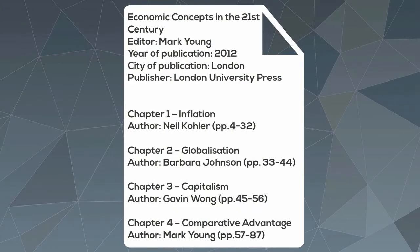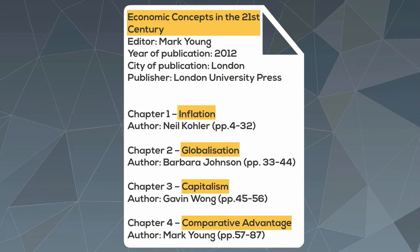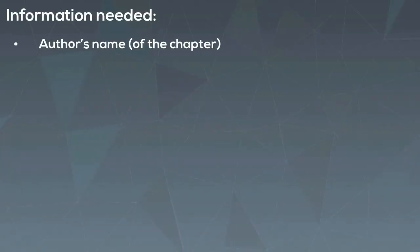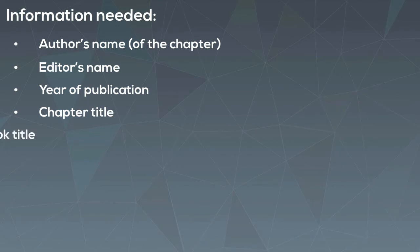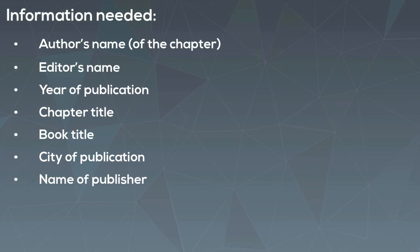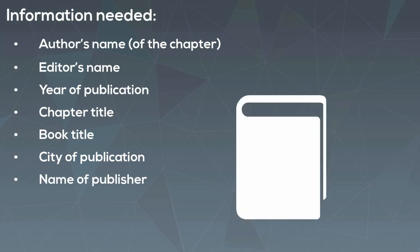Here is an example of an edited book. The title of the book is Economic Concepts in the 21st Century. Each chapter has its own title and its author. To cite an edited book, you will need to identify the name of the chapter author, the editor's name, year of publication, title of the chapter, title of the book, the city where the book is published and the name of the publisher. You should be able to find this information on the cover and the first few pages of the book.